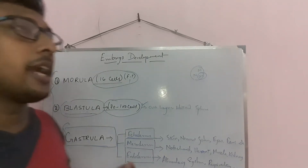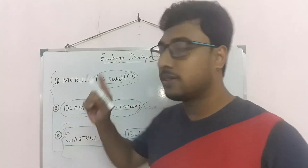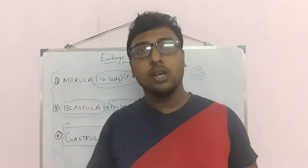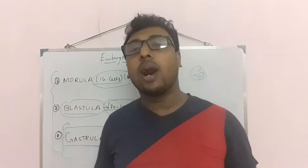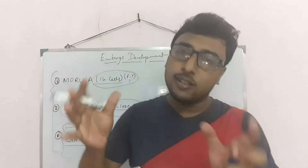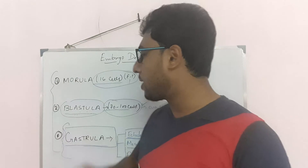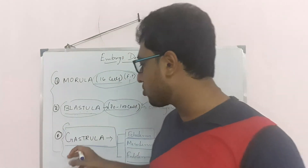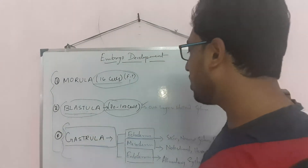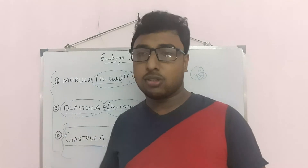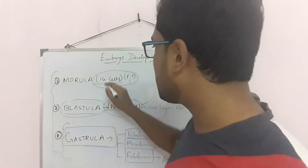In summary: the development of the embryo goes from morula to gastrula. From the single-cell zygote, a cell mass without layers forms — the morula. Then a one-layer hollow sphere forms — the blastula, which also contains a blastocyst. Then gastrula forms with the three main layers: ectoderm, mesoderm, and endoderm.